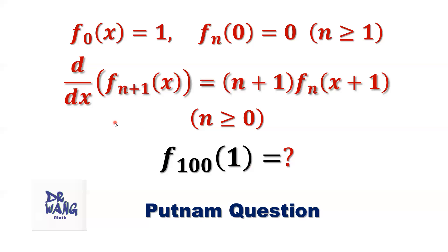Here, fn of x is a sequence of polynomial functions. How to find f100 of 1? We need to find the general formula for fn of x.